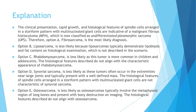The clinical presentation of rapid growth and histological features of spindle cells in a storiform pattern with multinucleated giant cells are indicative of malignant fibrous histiocytoma, now classified as undifferentiated pleomorphic sarcoma. Therefore, Option A, fibrosarcoma, is the most likely diagnosis. Liposarcoma is less likely as it typically demonstrates lipoblasts and fat content. Rhabdomyosarcoma is more common in children and adolescents and the histological features do not align. Synovial sarcoma typically presents as a well-defined mass near large joints. Osteosarcoma involves the metaphyseal region of long bones with bone destruction on imaging, which is not seen here.